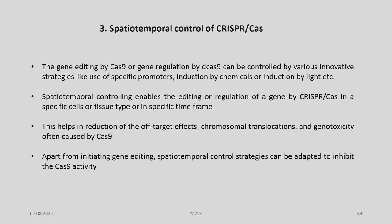Another application is the spatio-temporal control of CRISPR-Cas9. Gene editing by Cas9 or gene regulation by D-Cas9/gRNA can be controlled by various innovative strategies like the use of specific promoters, induction by chemicals, or induction by light. Spatio-temporal controlling enables the editing or regulation of a gene in specific cells or tissue types or in a specific time frame. This helps in reduction of off-target effects, chromosomal translocation, and xenotoxicity which are often caused by Cas9.